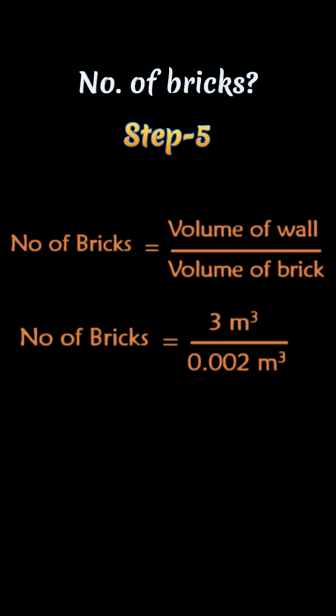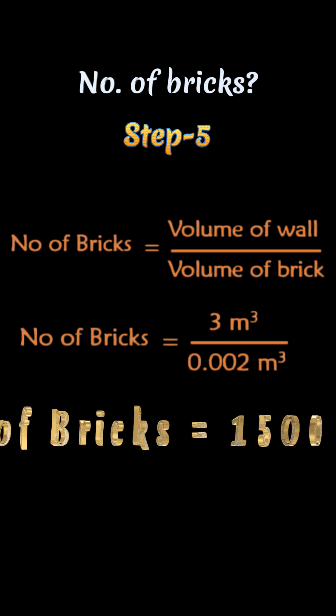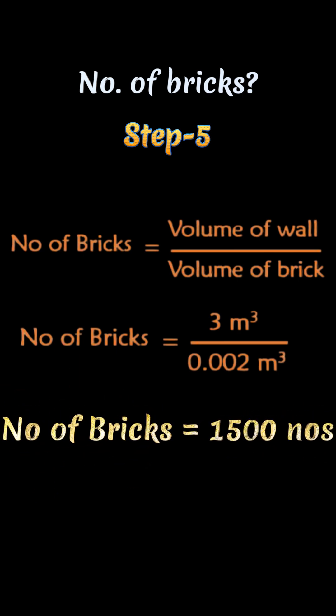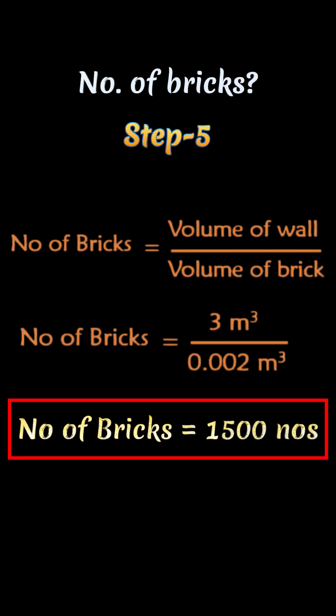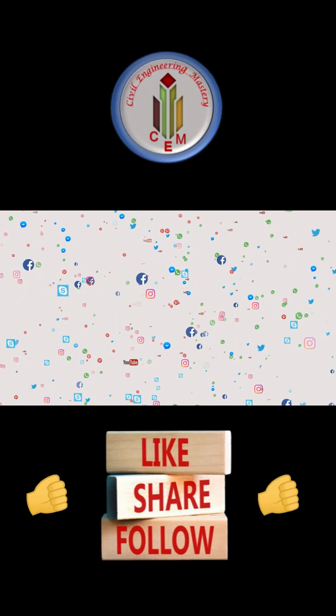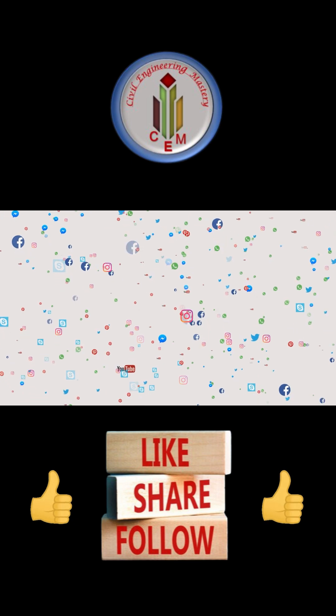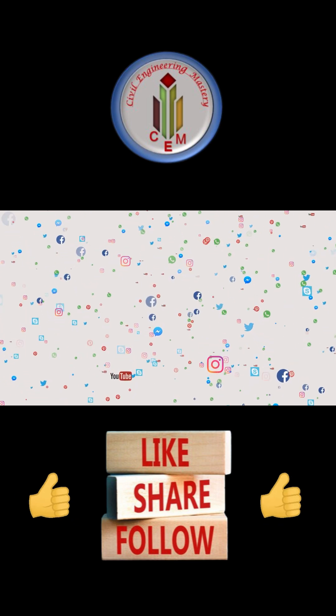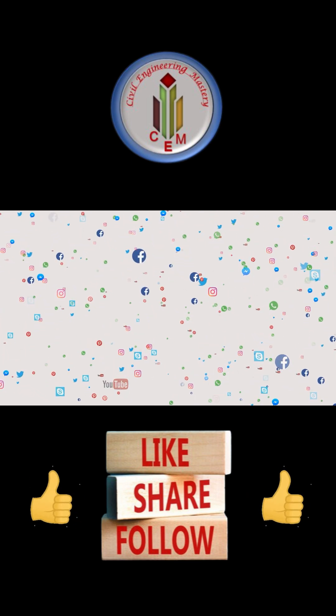Volume of wall is three meter cubed and volume of brick is 0.002 meter cubed, so number of bricks is equal to 1500. Follow and share for more civil engineering updates.